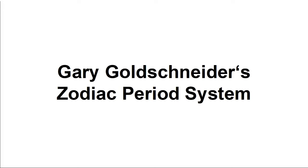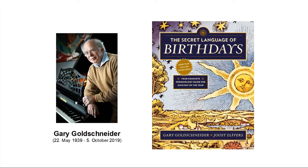Hi, my name is Christian Balla and I'm the creator of AstroMatcher API. In this video I'm going to introduce you to the zodiac period system of Gary Goldschneider, the system also used by AstroMatcher API to calculate the compatibility of two people for a long-term romantic relationship.